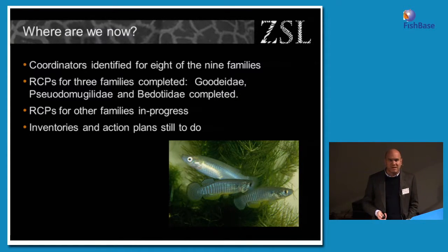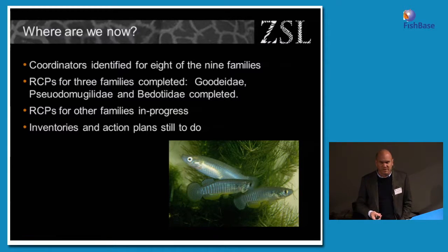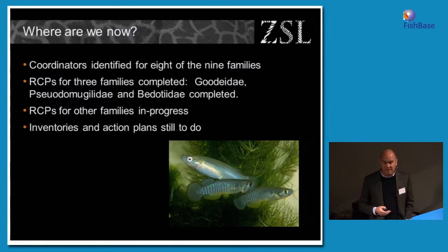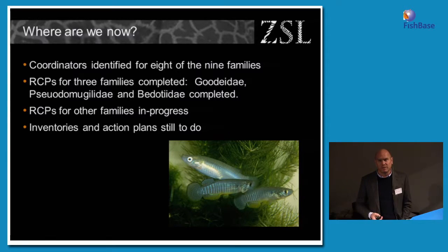So where are we now? It's only a year since the workshop, and I think we've made some good progress. Bear in mind that most of the people who attended have day jobs and other things to do. But we've managed to find coordinators for eight of the nine families pre-selected, and the regional collection plan for three families has been completed. The rest are still a work in progress, but we are making good progress — many, many species to sift through, and still a tremendous amount of work that needs to happen. Once all that work is done, coordinators need to draft and develop inventories for species, and then the next stage, which is the action plans. The ones that have progressed the most are the ones with the fewest species in their group.